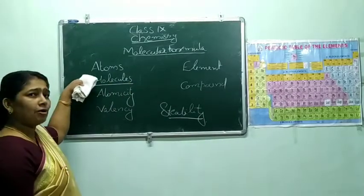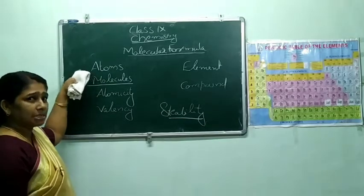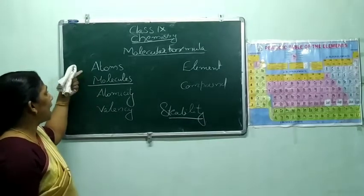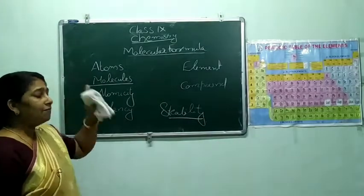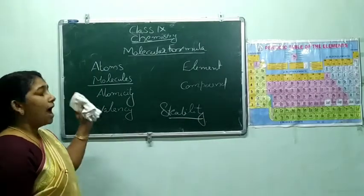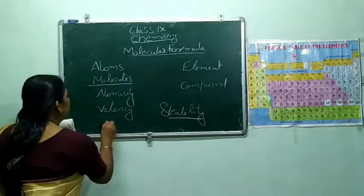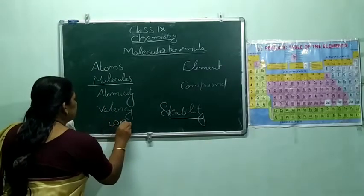Either by transfer of electrons or by sharing, atoms are trying to attain 8 electrons in the valence shell. And that is the reason for making molecules. Molecules are stable. Very few atoms are stable by themselves, so they either convert into molecules or they convert into ions.